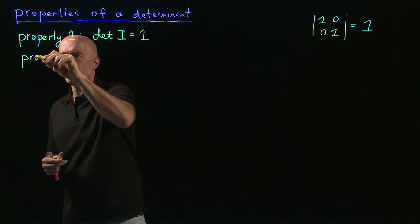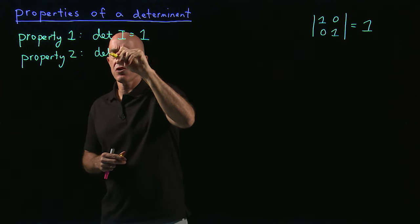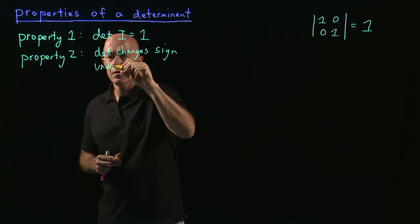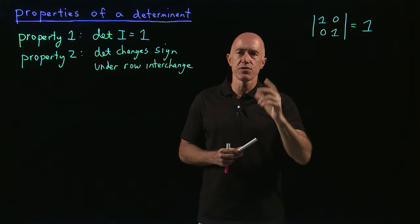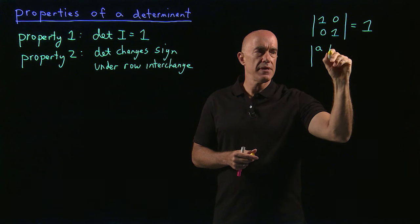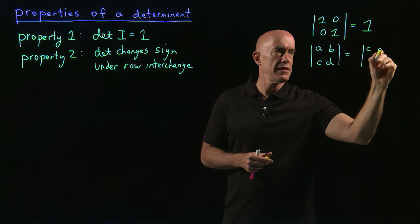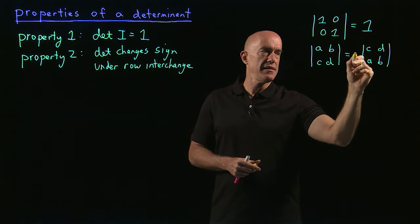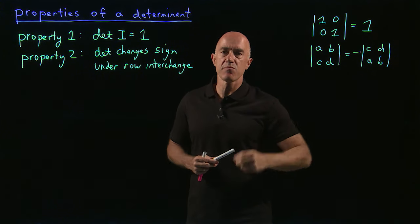The second property is that the determinant changes sign under row interchange. If you switch two rows in a matrix, the determinant changes sign. For example, taking the matrix with rows (A, B) and (C, D) and switching to (C, D) and (A, B): the first determinant is AD minus BC, while the second is BC minus AD, which has the opposite sign.